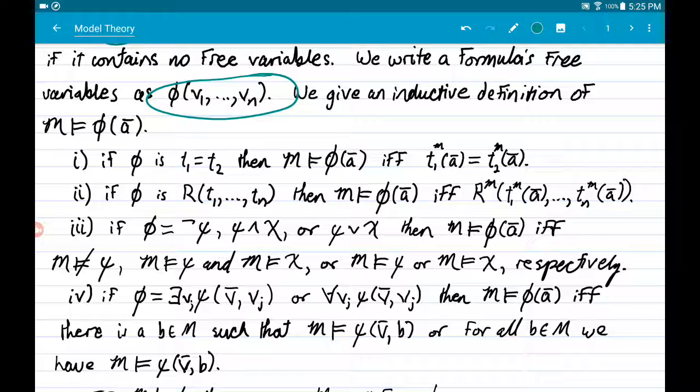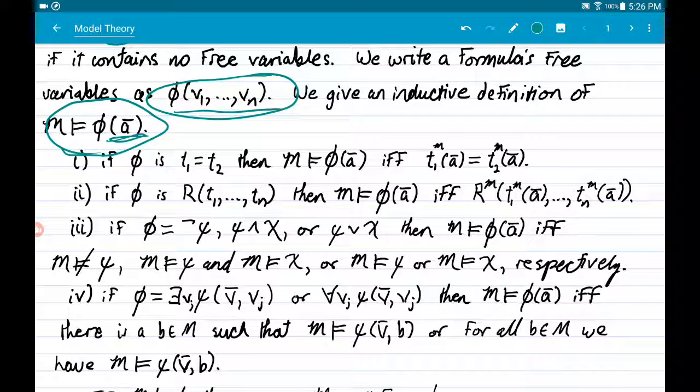We will inductively define what it means for a structure to satisfy a sentence that has no free variables. That is to say, if it has any n free variables, then we substitute those n free variables with this vector of objects from the domain so that a bar is really notation for this, so to speak, vector of constants.